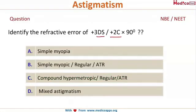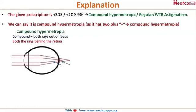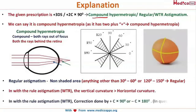The prescription is plus 3 diopter sphere with plus 2 diopter cylinder at 90 degrees. There are two plus signs, so it is compound. It is regular because it is not between 30 to 60 or 120 to 150. And it is with-the-rule because it is a plus 90 degrees prescription. Very simple.